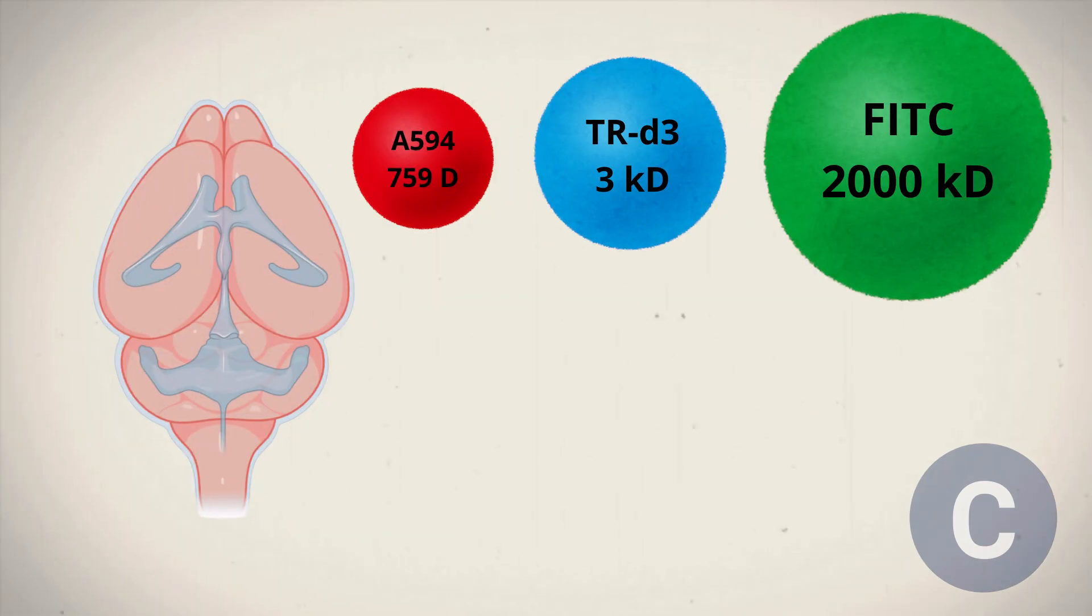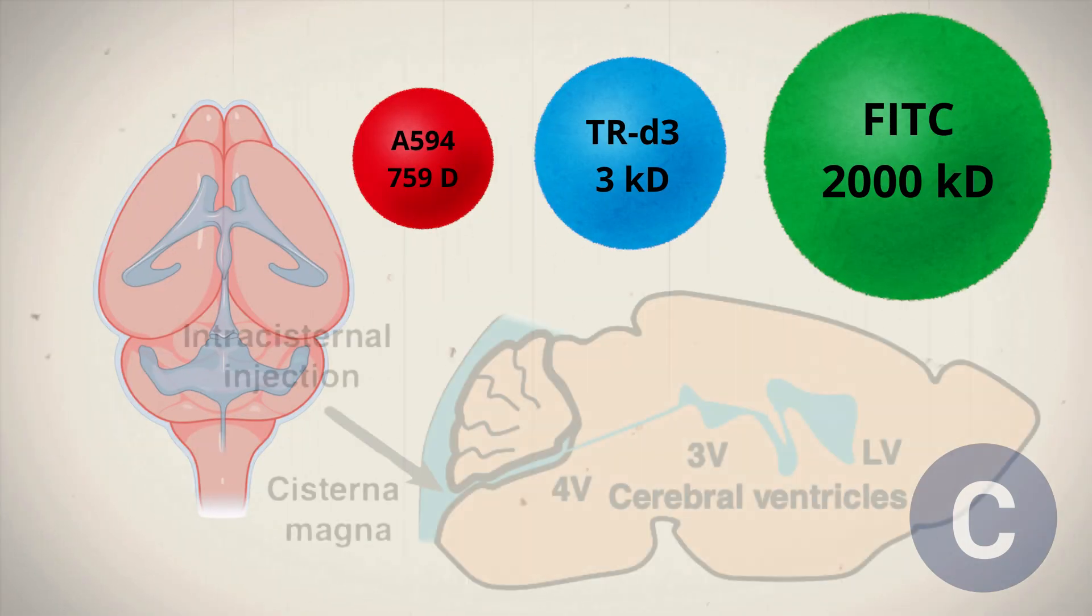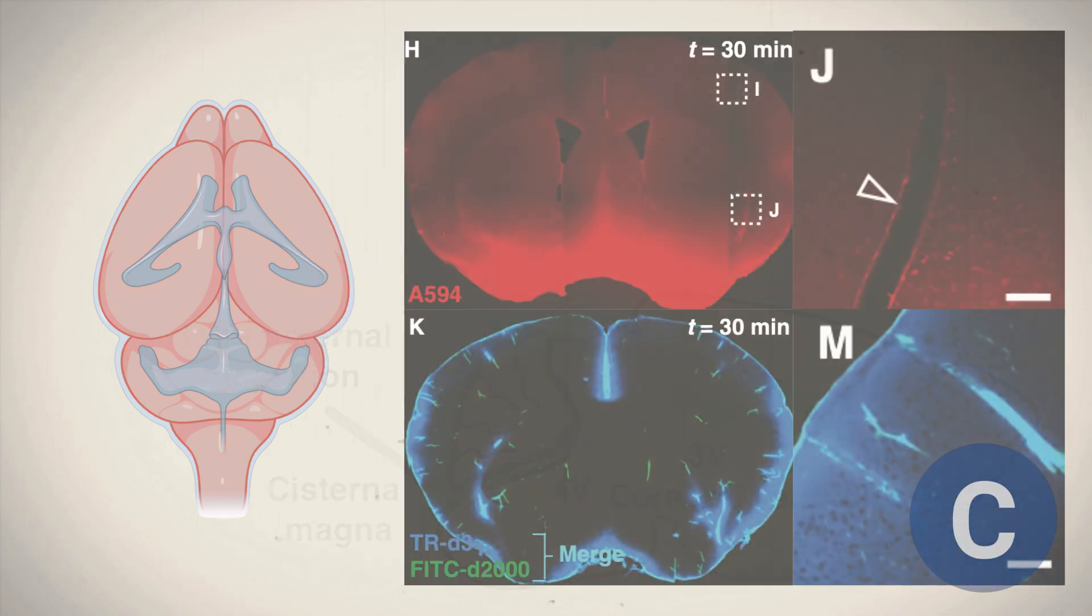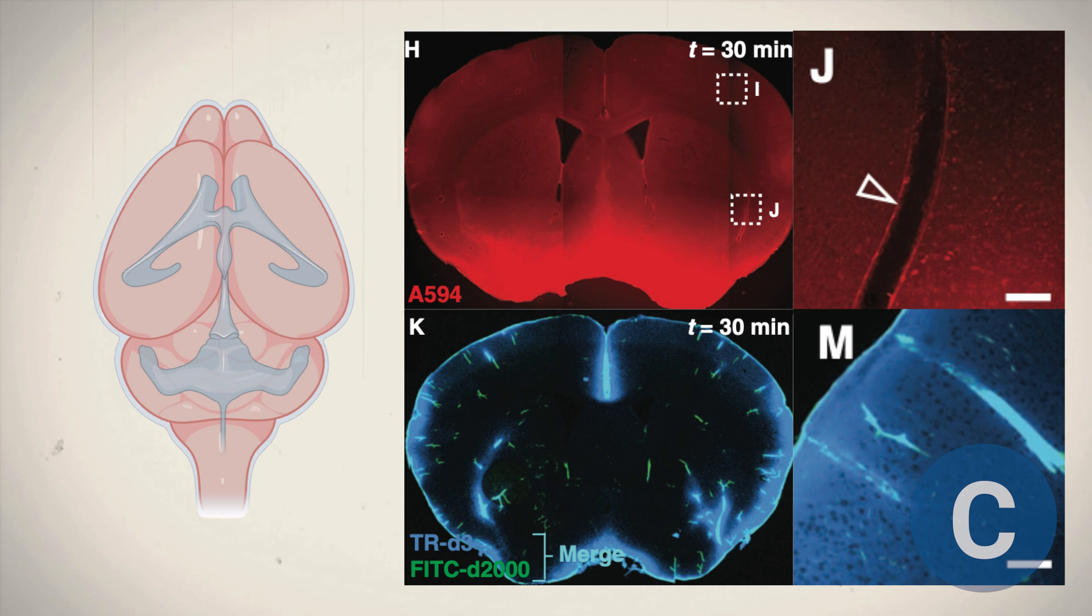Just like in the first experiment, the researchers used fluorescent tracers again, but this time they injected them directly into the cisterna magna. Thirty minutes after the injection, they examined the distribution of the tracers in brain sections using a fluorescence microscope. The images provide a clear view of the process.